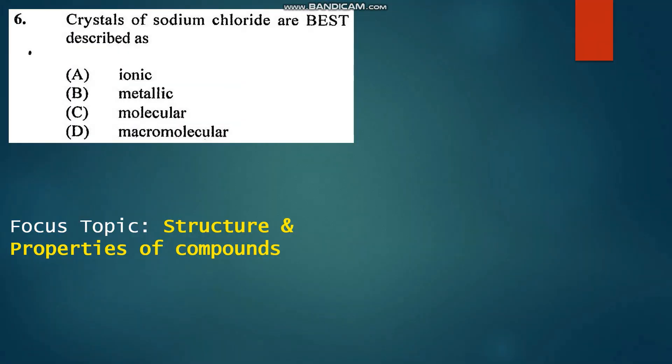Number six: Crystals of sodium chloride are best described as... Sodium chloride is an ionic substance and it consists of sodium and chloride ions in a giant lattice arrangement. So sodium chloride is ionic. That's A.